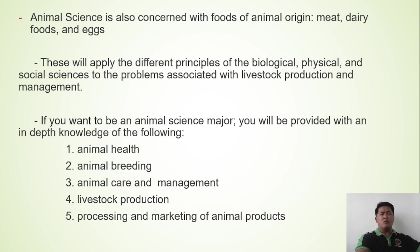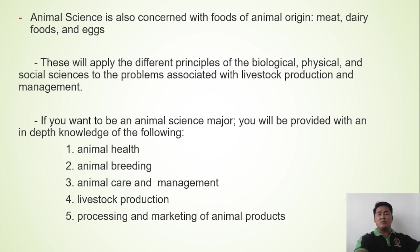Animal science is also concerned with foods of animal origin, which include meat, dairy foods, and eggs. It applies different principles of the biological, physical, and social sciences to the problems associated with livestock production and management.